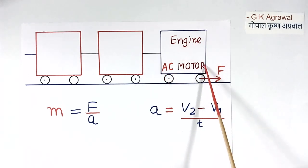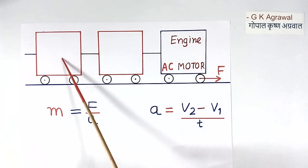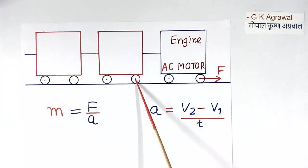So this is the engine. These are two compartments I have shown; there will be many more. I have shown only two. These are wheels and this is the rail.